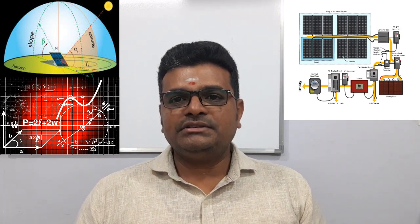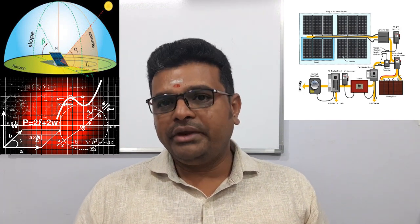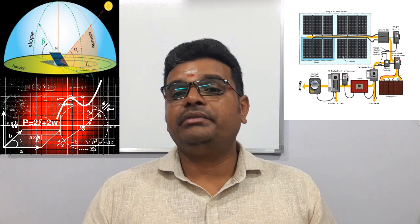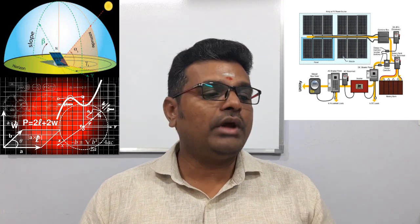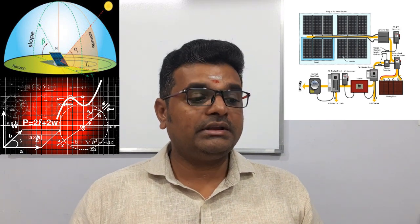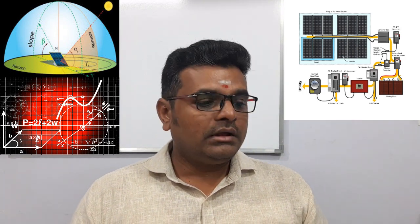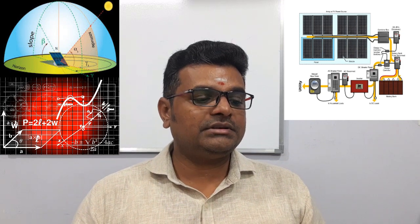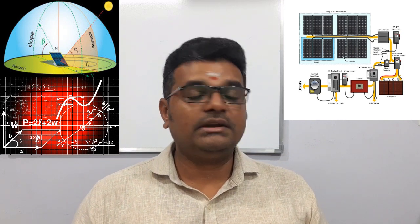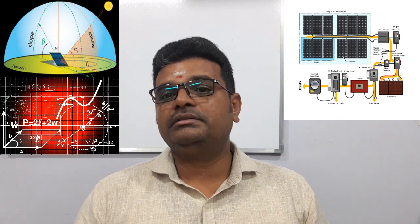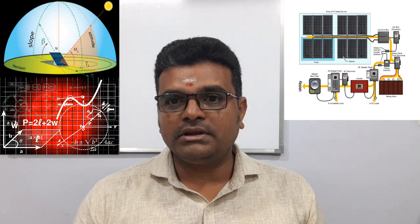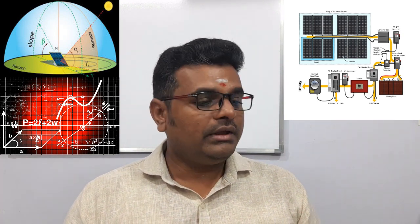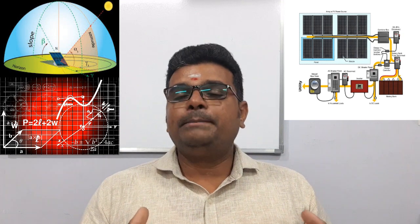It is up to you whether you want to store the energy or go on-grid. If you are going off-grid, you have to go with almost 200Ah batteries — almost 10 batteries are required if you are designing the system at 24 volts. If you are designing the system at 48 volts, then you have to increase the number of batteries accordingly.